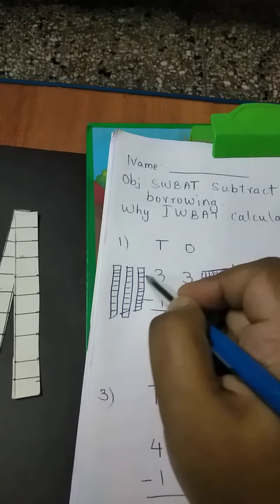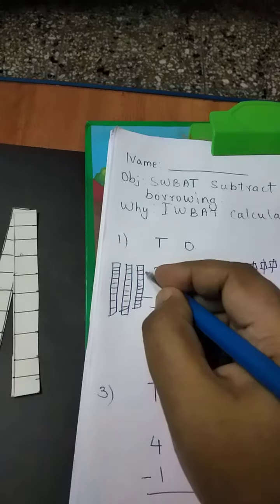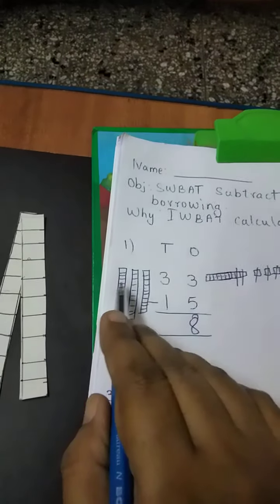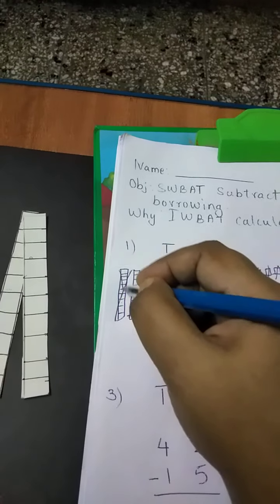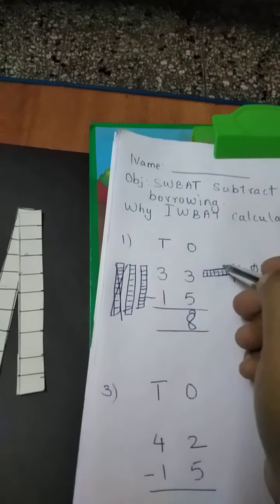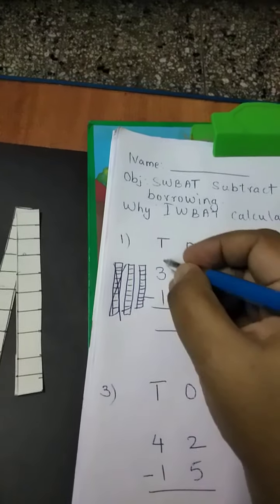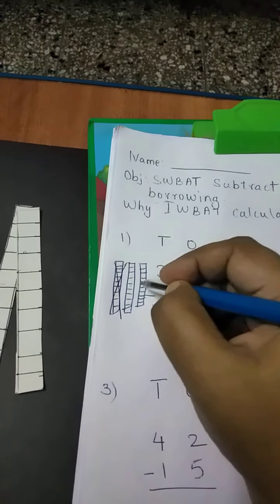But I took from here to here. That means this ten came from where? It came from here. So what will I do? This ten that I took from here, I will subtract it. This ten has come here. Right? So now how many tens are left here? 2 tens.